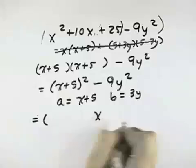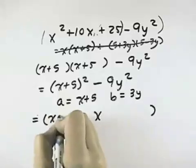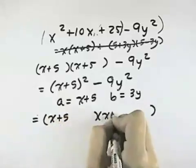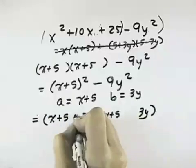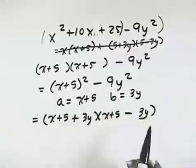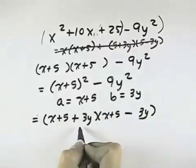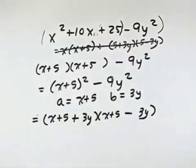So that allows us to factor it into the sum and difference—we put a first, and then b. We have the sum and difference of the square roots, which gives us x plus 5 plus 3y times x plus 5 minus 3y. Neither of those can be broken down further, so that's the completely factored form.